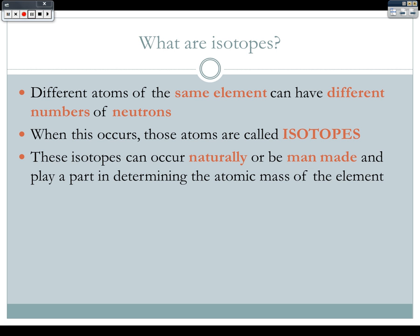Let's take a look at some different isotopes. Carbon has three different isotopes: carbon-12, carbon-13, and carbon-14. I have to give the mass number of each because that's telling me the different isotope of carbon we're talking about. Remember, the average atomic mass is the average weighted mass of all the different isotopes. They have the same number of protons but different numbers of neutrons — carbon-13 has one more neutron, and carbon-14 has two more neutrons.